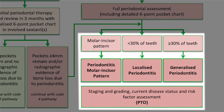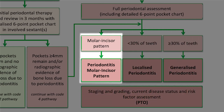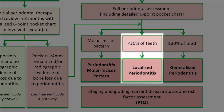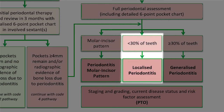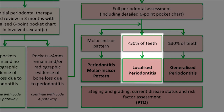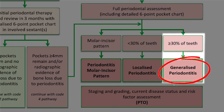In this pathway, if you notice a pattern on just the molars and incisors, this is diagnosed as periodontitis, molar-incisor pattern, followed by the staging, grading, stability and risk factors. If less than 30% of teeth have pocket depths greater than or equal to 4mm with radiographic evidence of bone loss, this is localised periodontitis. More than 30% will be generalised periodontitis.